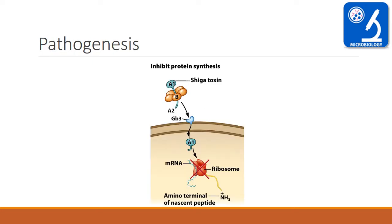Now the pathogenesis. Infection of Shigella occurs by the fecal-oral route. Shiga toxin is produced by Shigella and has two fragments: A and B. Fragment B binds with the GB3 receptor, and fragment A inhibits the 28S subunit of the 60S ribosomes, ultimately inhibiting protein synthesis. This is how cell death occurs due to Shiga toxin.